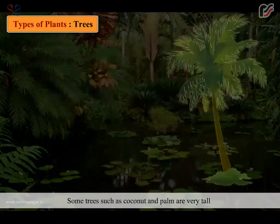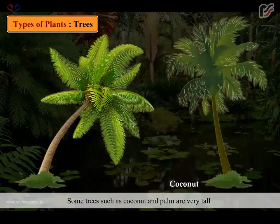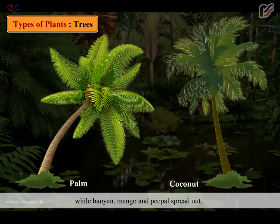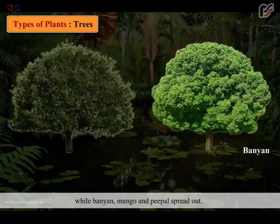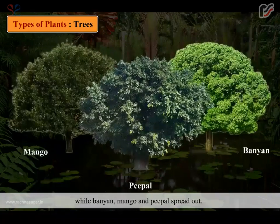Some trees such as coconut and palm are very tall, while banyan, mango and peepal spread out.